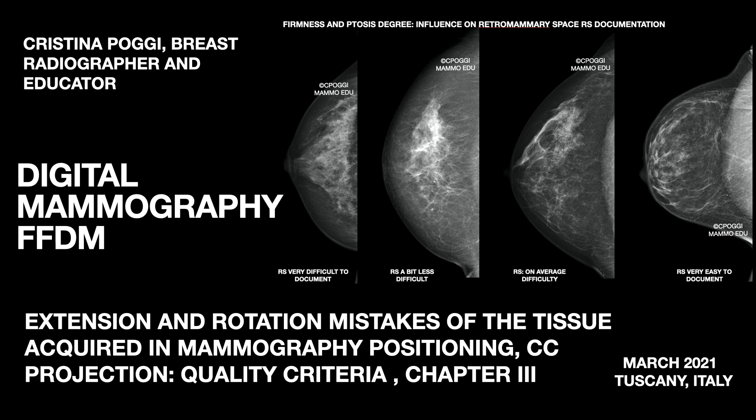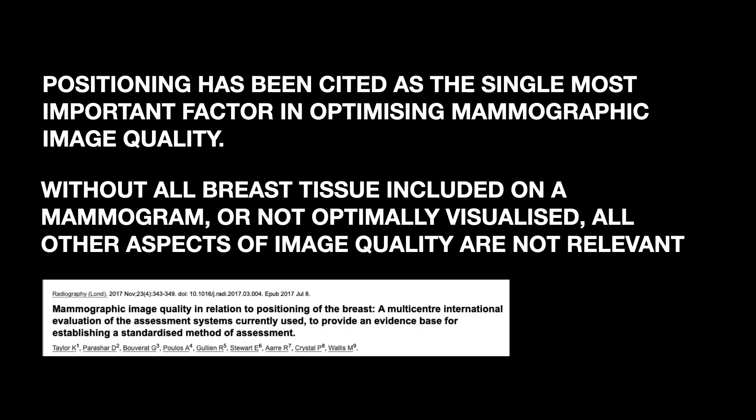Mistakes of extension and rotation of the tissue acquired in the CC projection, comparing them with the quality criteria. The extension of the tissue acquired is of paramount importance, as opposed in a paper written by a group of our colleagues in Radiography in 2017. Without all breast tissue included or not well visualised, all other aspects of image quality are not relevant.